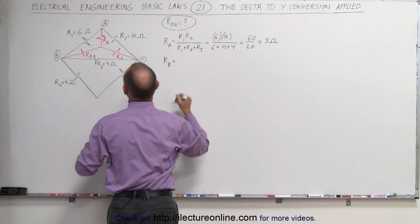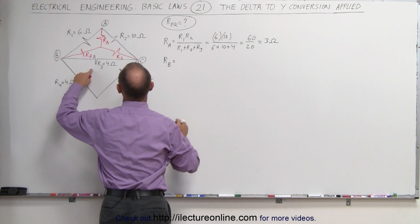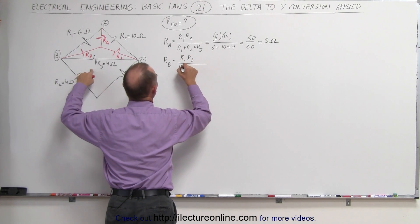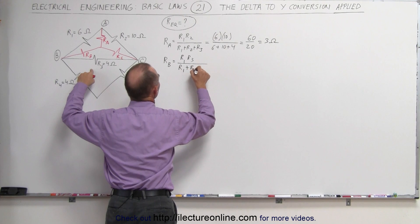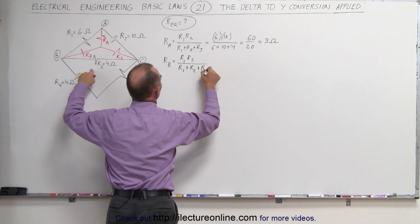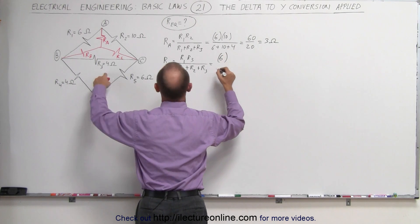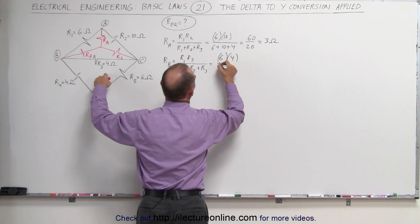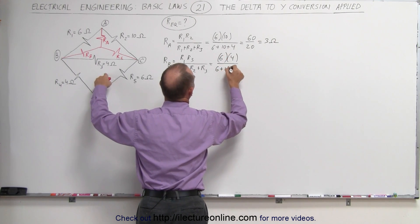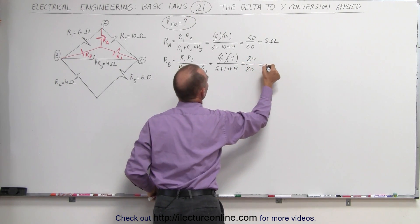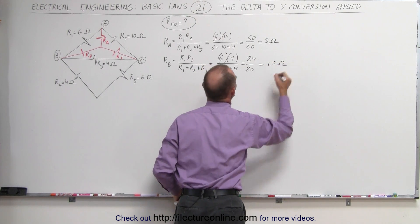R sub B is equal to, it's between R1 and R3, so it's R1 times R3 divided by the sum of the three resistors in the delta, R1 plus R2 plus R3. So in this case, R1 is 6, R3 is 4, and the sum now is 6 plus 10 plus 4, which is 24 divided by 20, which is equal to 1.2 ohms.